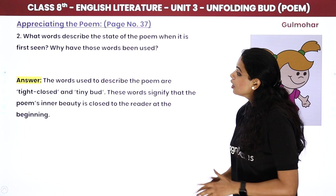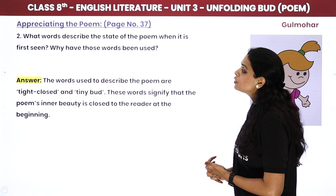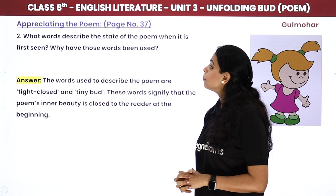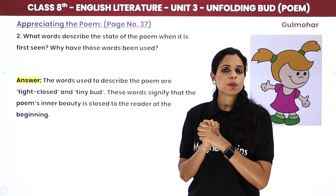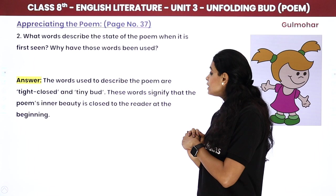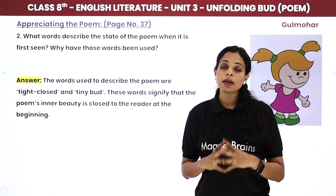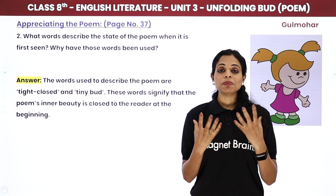What words describe the state of the poem when it is first seen, and why have those words been used? The words used to describe the poem are 'tight,' 'close,' and 'tiny bud' — 'close' meaning you can't understand it at all, and 'tiny bud' meaning seeing it causes no amazement. These words signify that the poem's inner beauty is closed to the reader at the beginning, like a tiny bud.